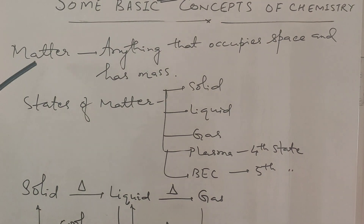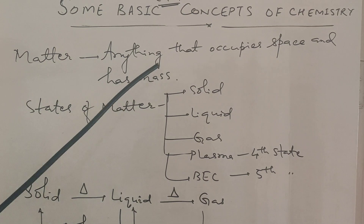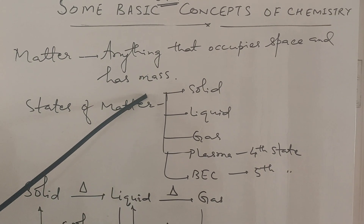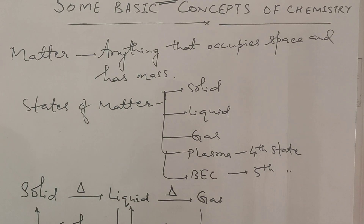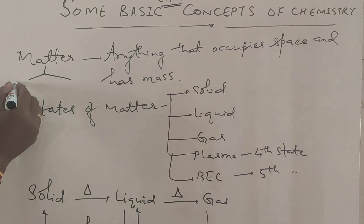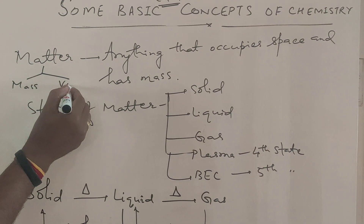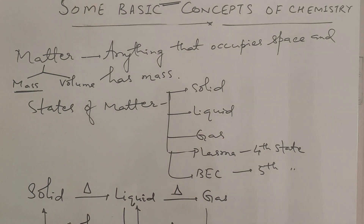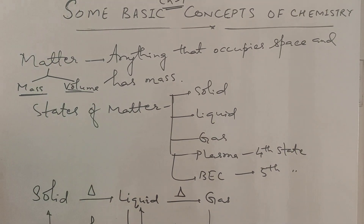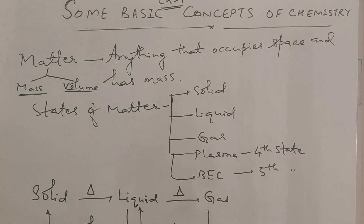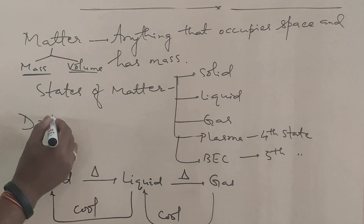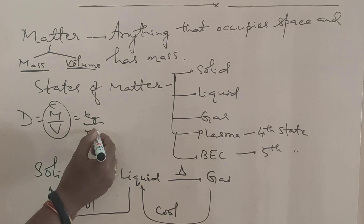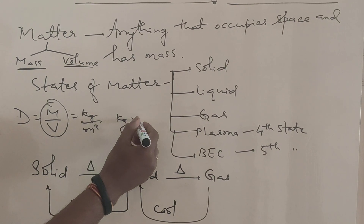Matter is anything that occupies space and has mass, so matter must have mass and volume. The SI unit of mass is kg, and the SI unit of volume is meter cube. Density is mass per unit volume, so its unit is kg per meter cube.